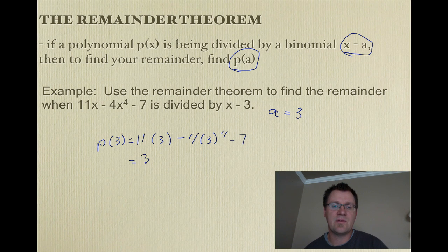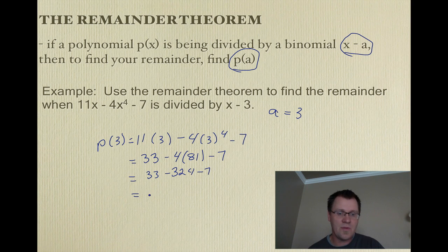And that is equal to 11 times 3 minus 4 times 3 to the power of 4 minus 7. So, 11 times 3 is 33 minus 4. 3 to the power of 4 is 81. So, we've got 33 minus 324 minus 7. And when you do the math, you end up with negative 298. And that's what we got by using synthetic division last slide.